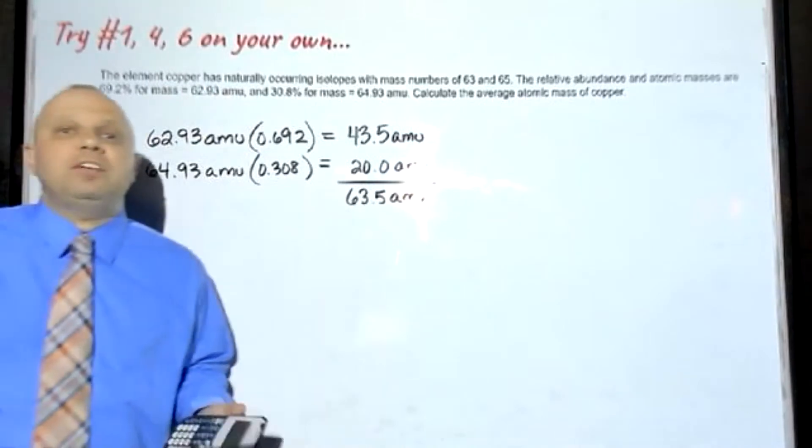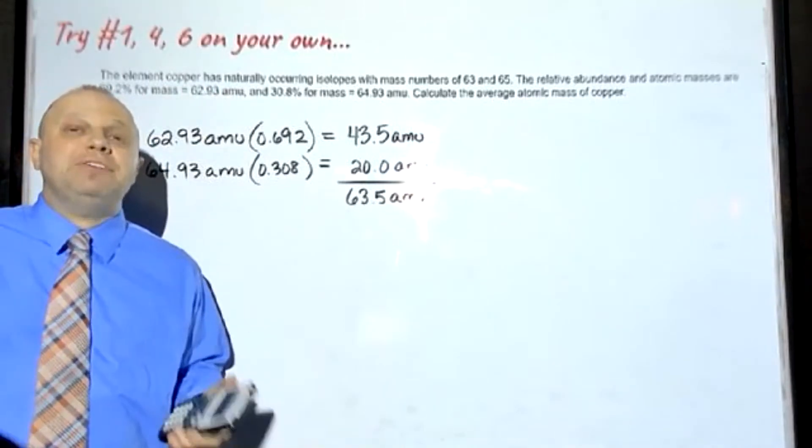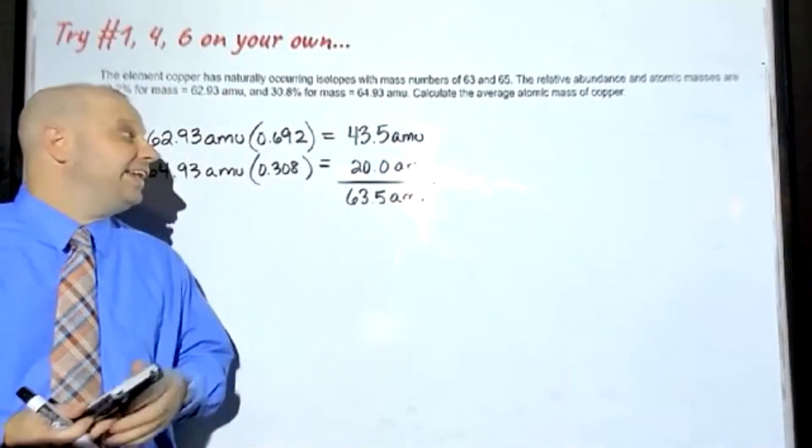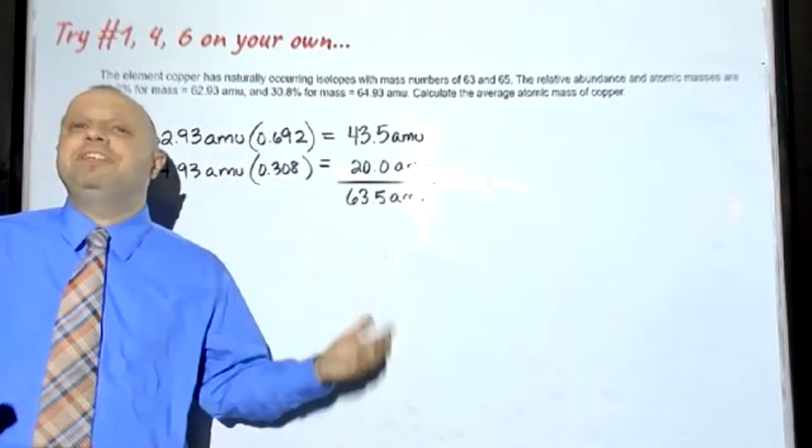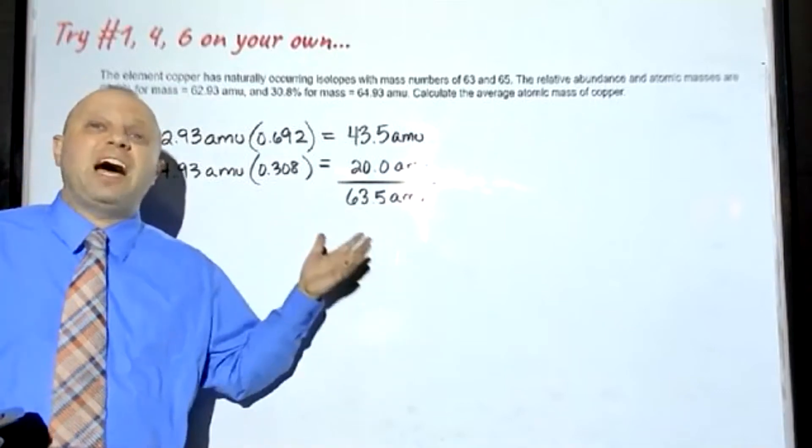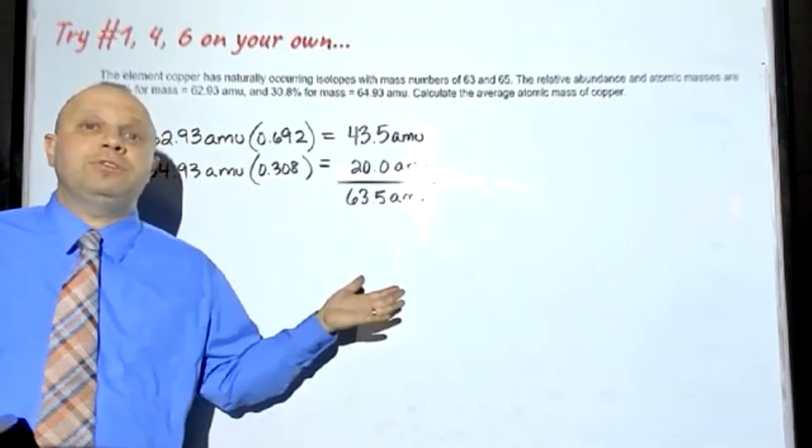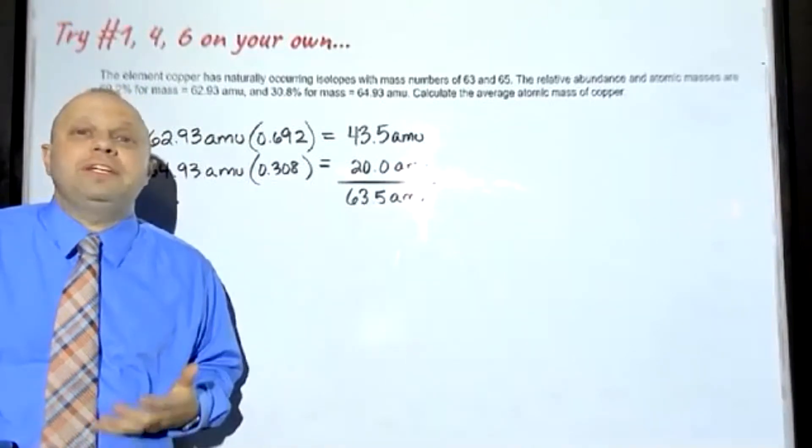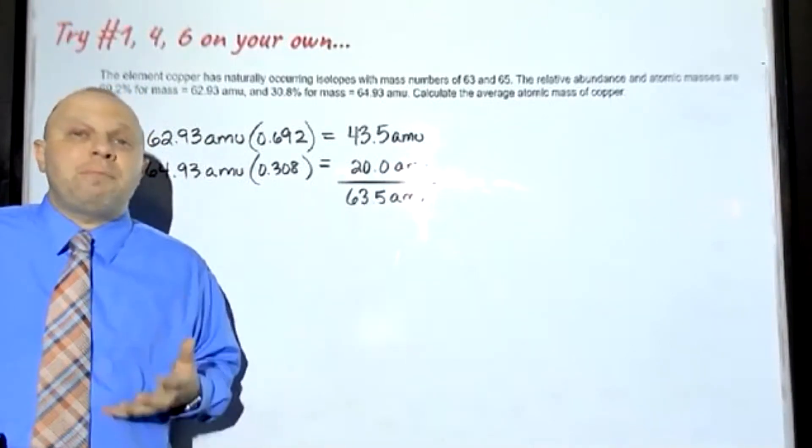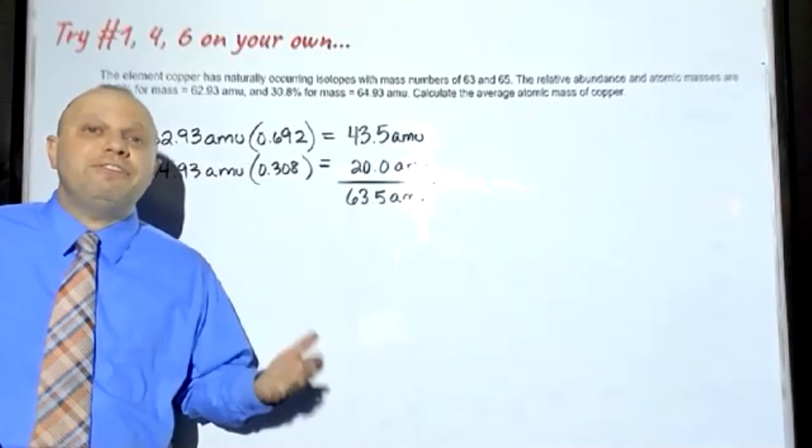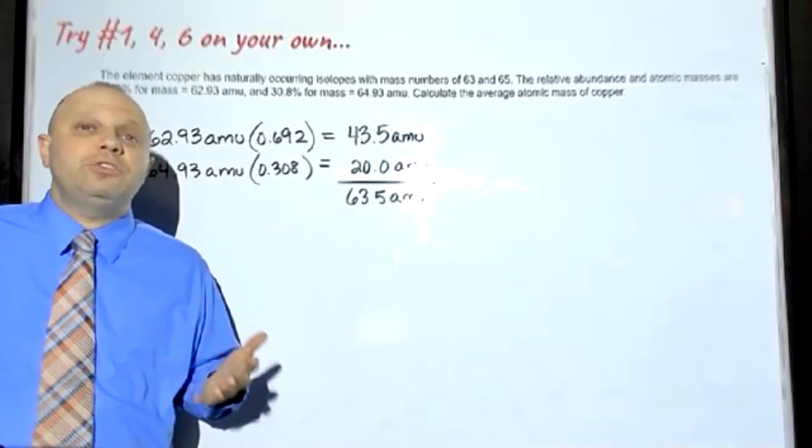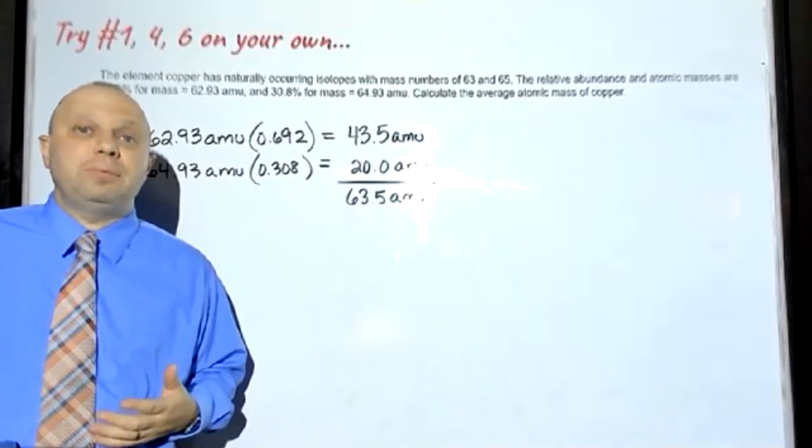If you check your periodic table for the average atomic mass of copper, you'll find that it's 63.55 AMU. So we got extremely close to the answer. The nice part about these problems is that for some of them, you can verify whether or not your work is correct by looking at a periodic table.